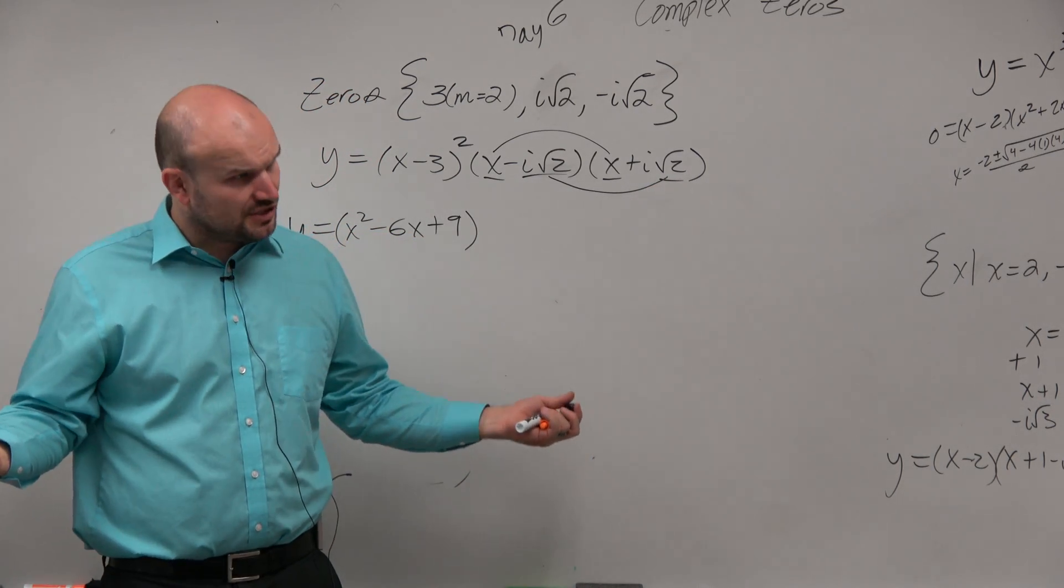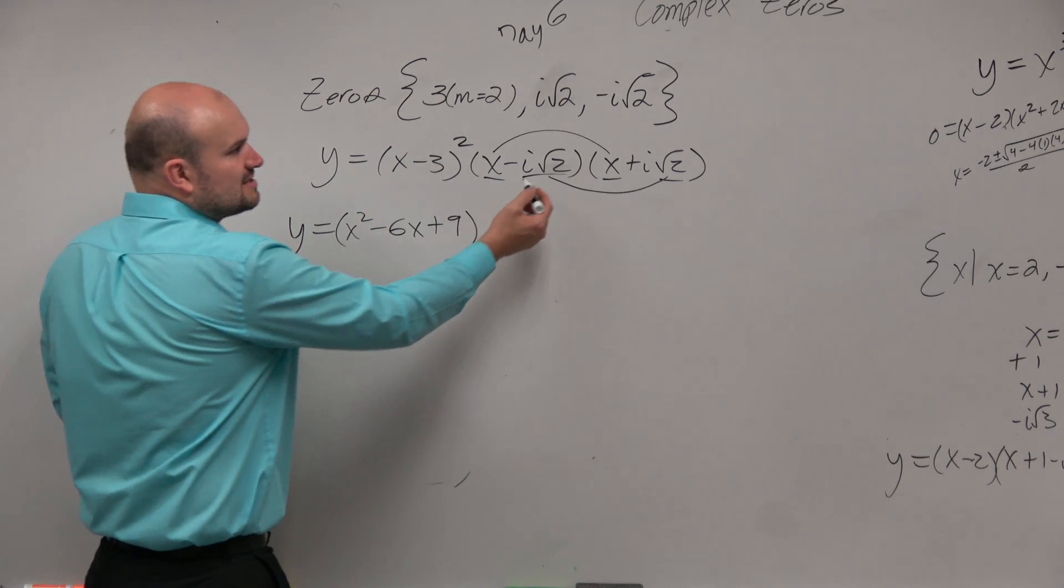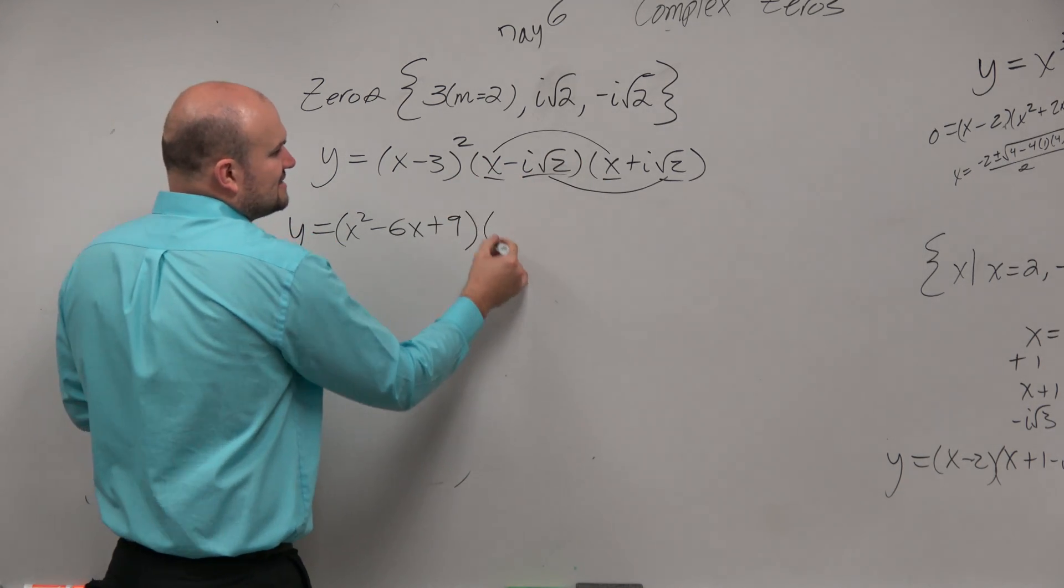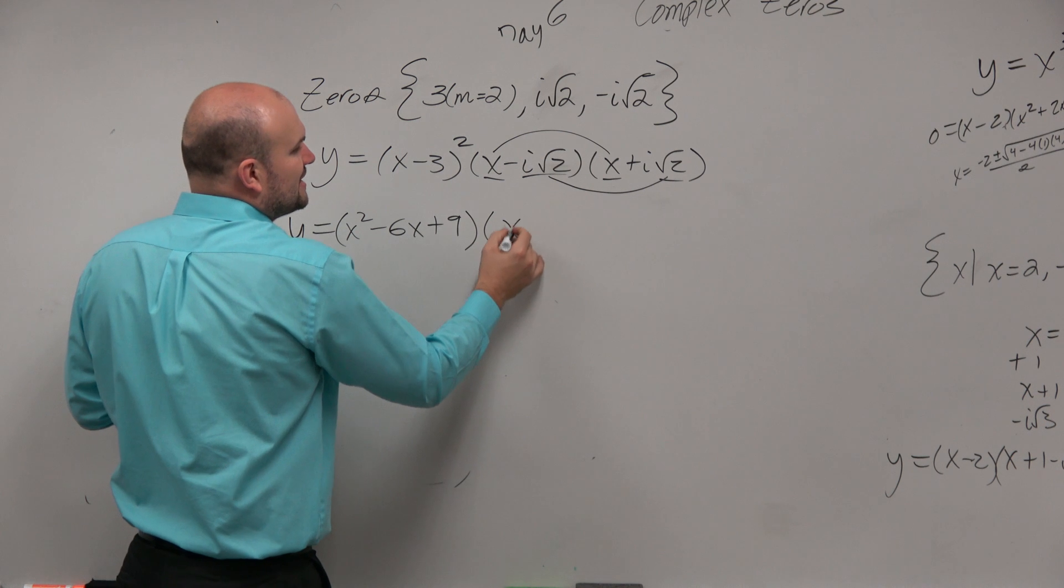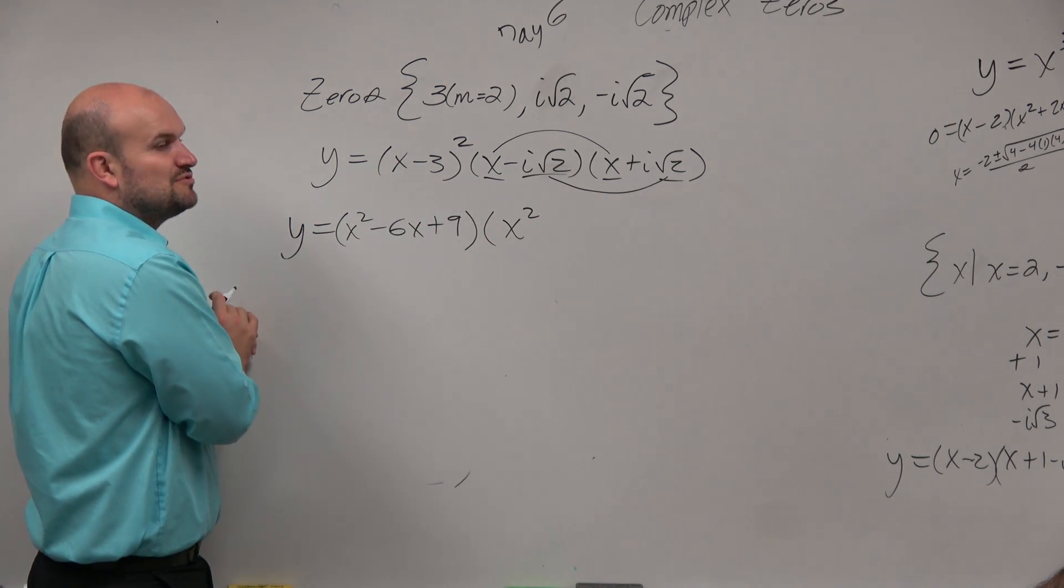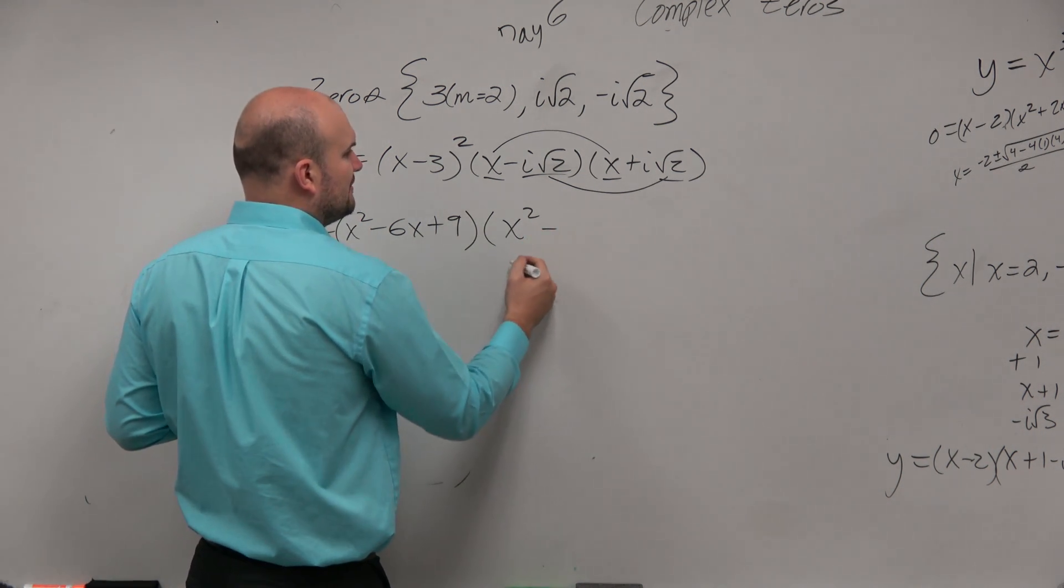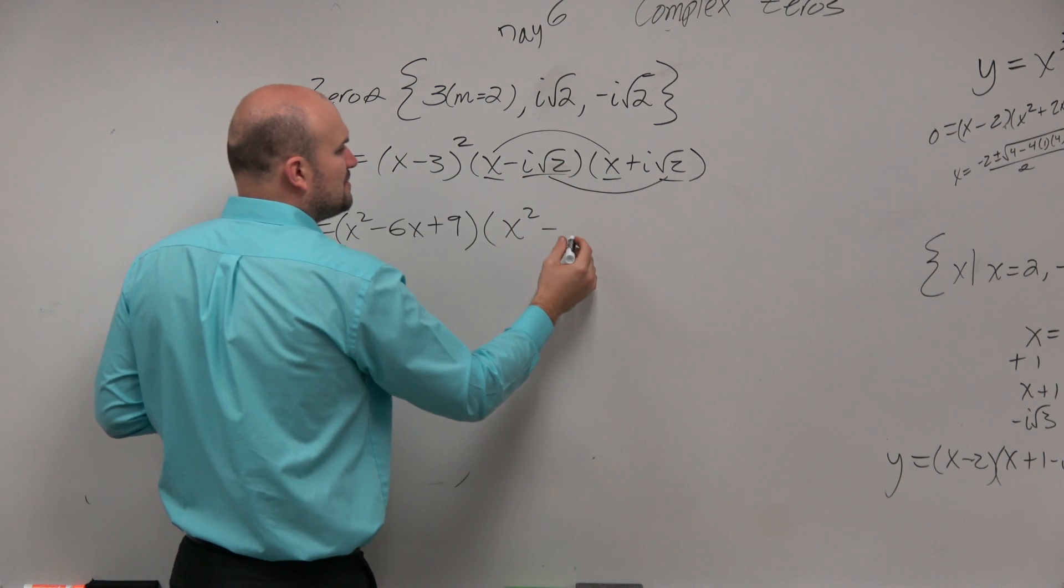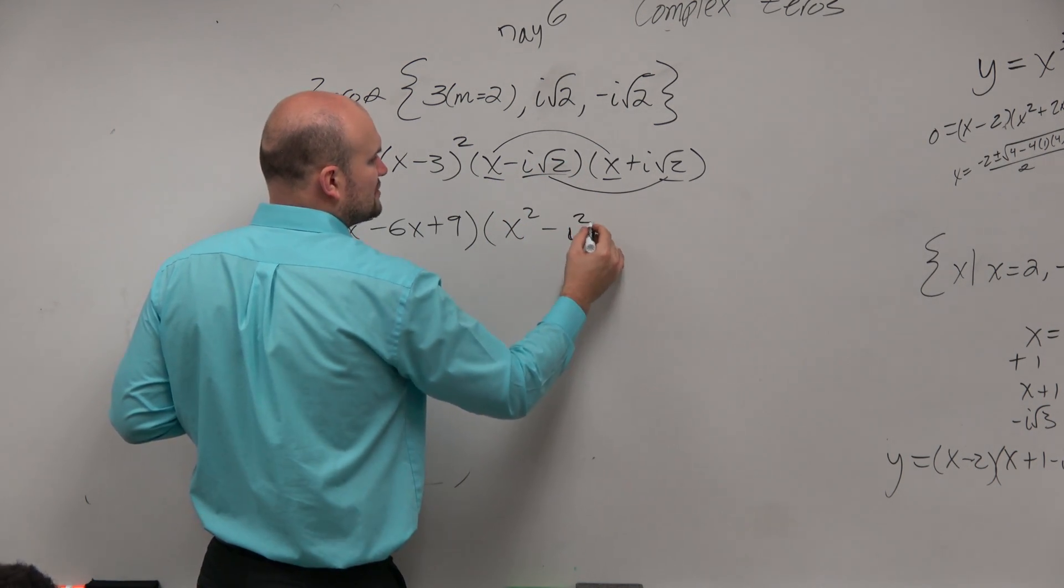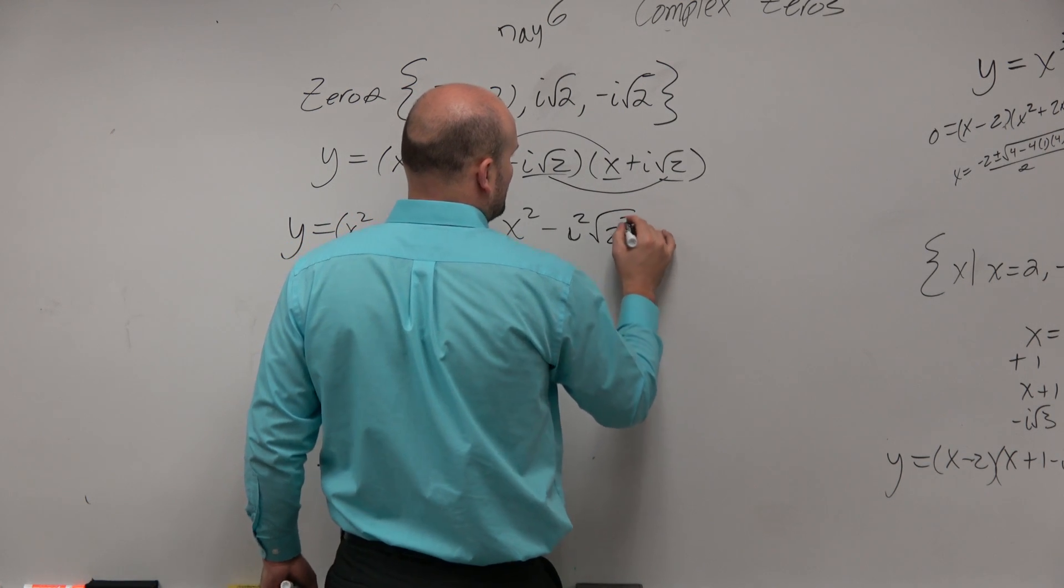If you're confused, multiply everything by distributed property or FOIL. And what you'll see is the middle terms are going to add to 0. So if I just multiply my first two terms, I get x squared. Now this is where it gets a little fun. Negative i times square root of 2 times positive i square root of 2. You'll get the answer eventually. Let's just do everything individually. Negative i times positive i is negative i squared. Square root of 2 times square root of 2 is going to be the square root of 2 squared.